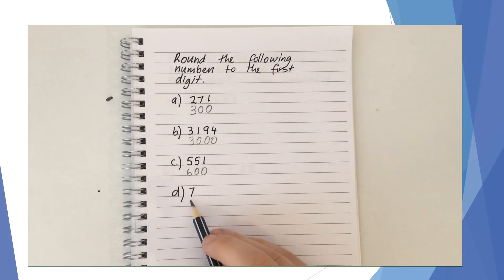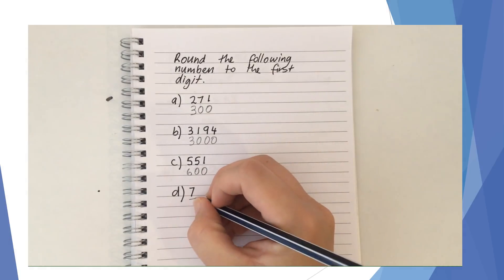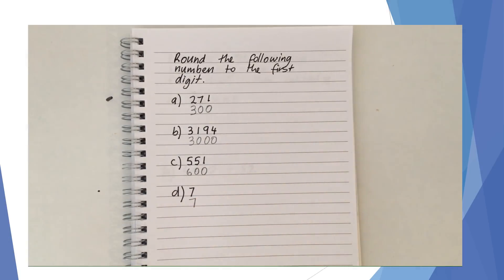For example D, we're asked to round to the first digit but we've only got one digit, so the answer is 7. That's a bit of a trick question — you're asked to round off to the first digit, so the answer is 7 because that's all there is.